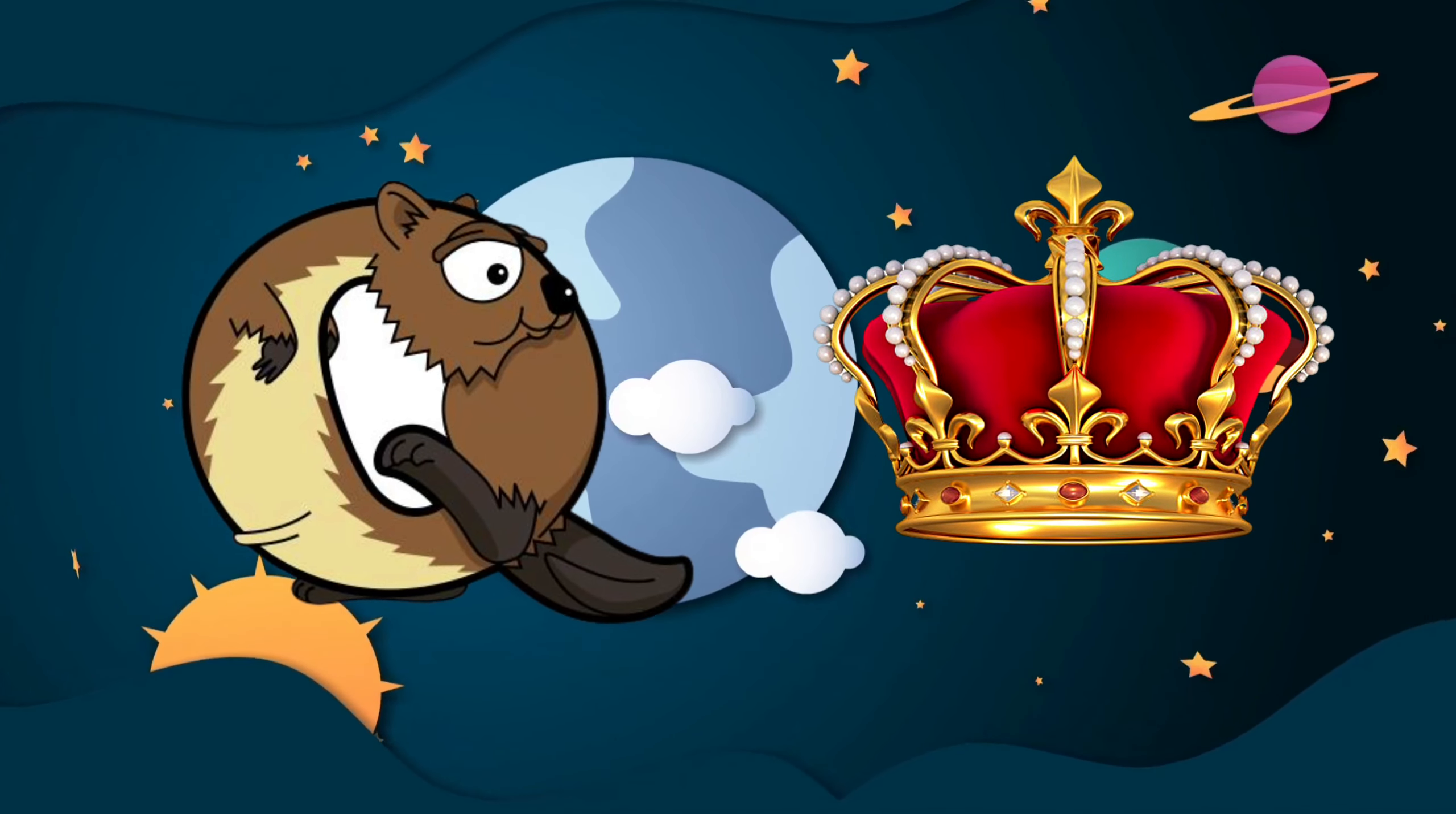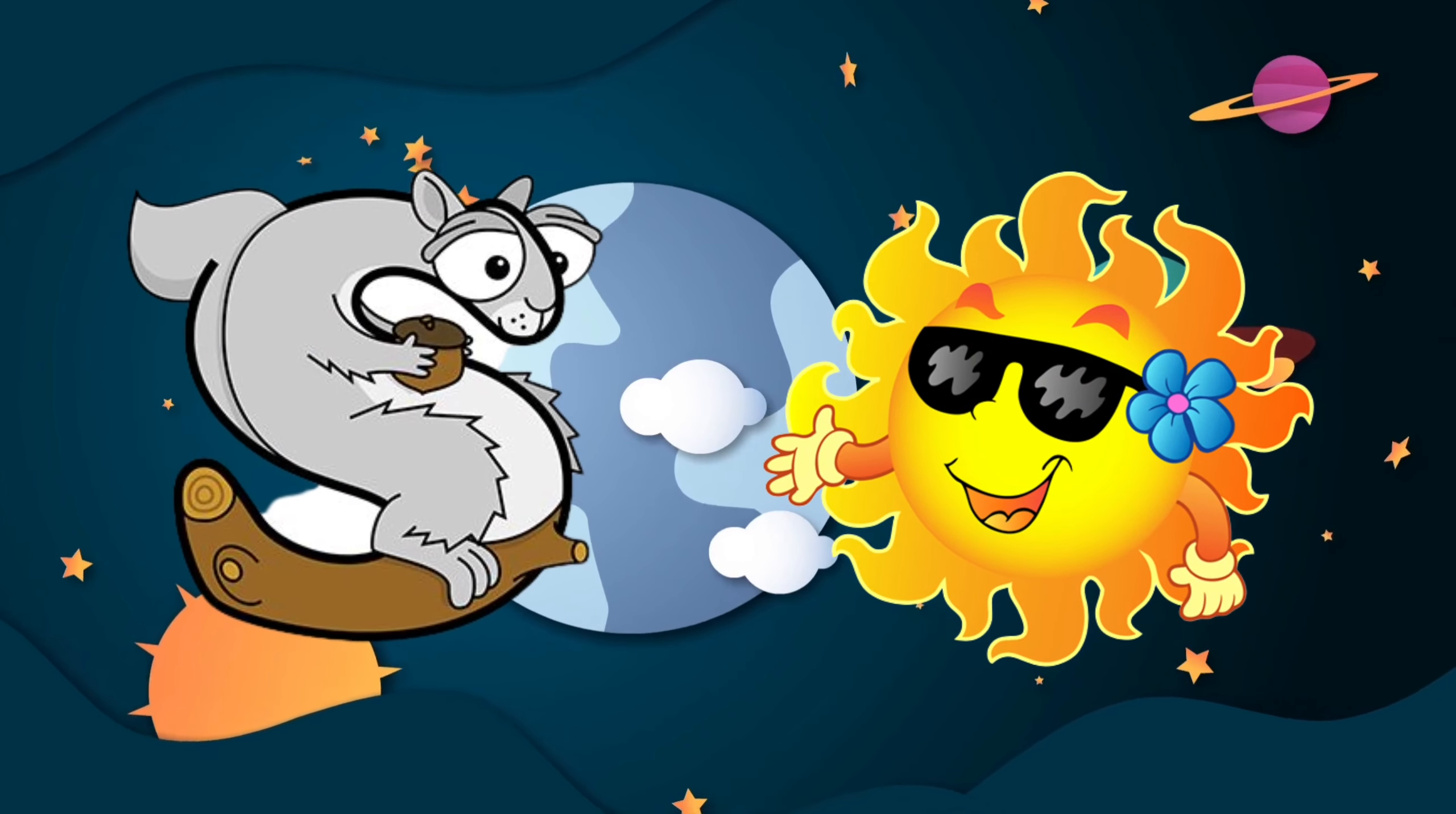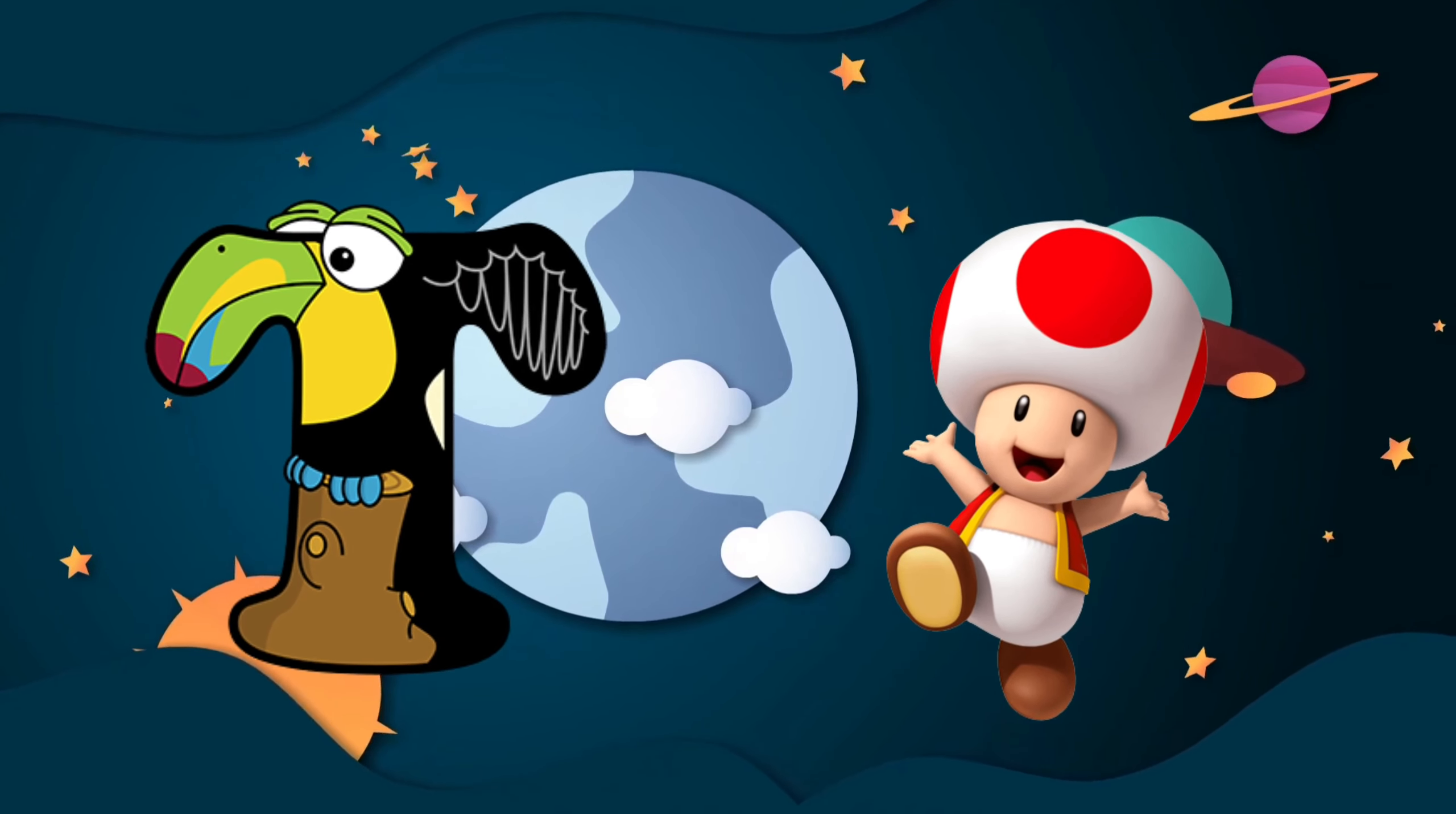Q is for queen, k-k-queen. R is for rabbit, r-r-rabbit. S is for sun, s-s-sun. T is for toad, t-t-toad.